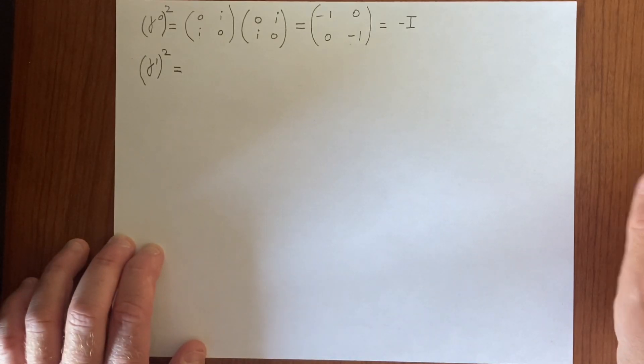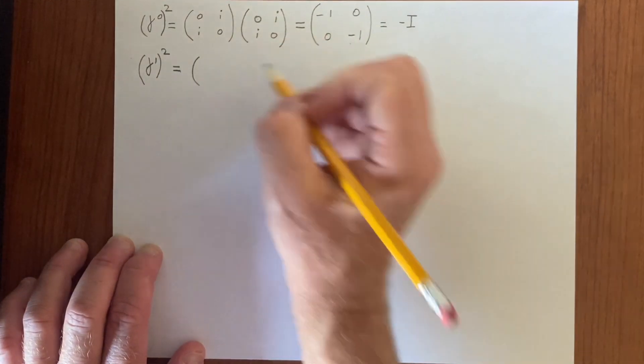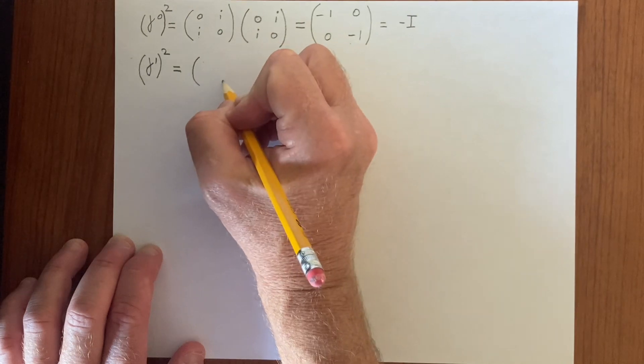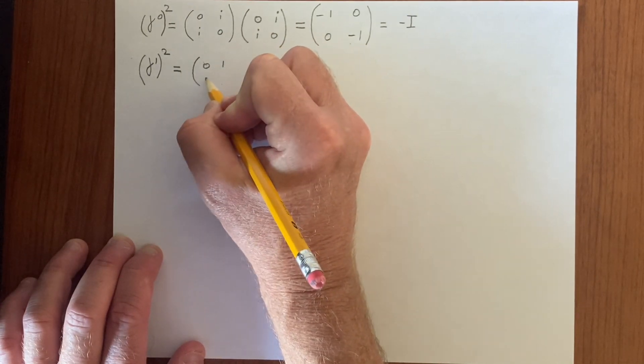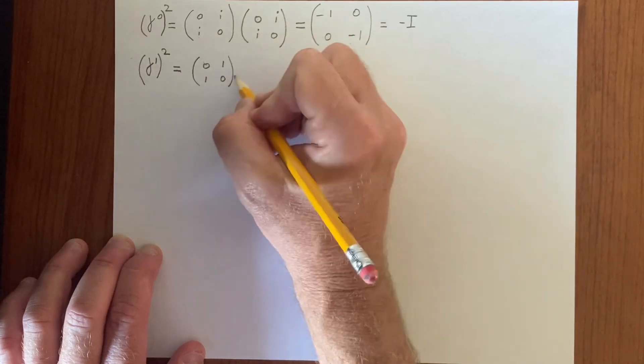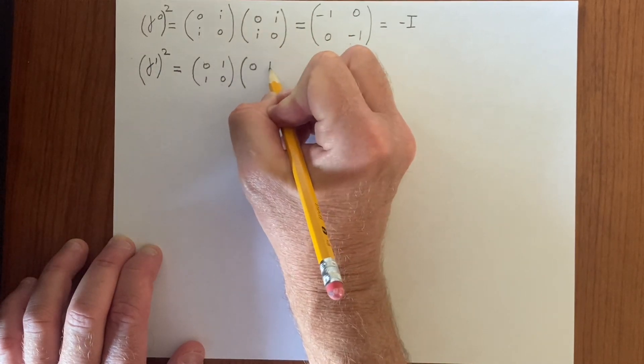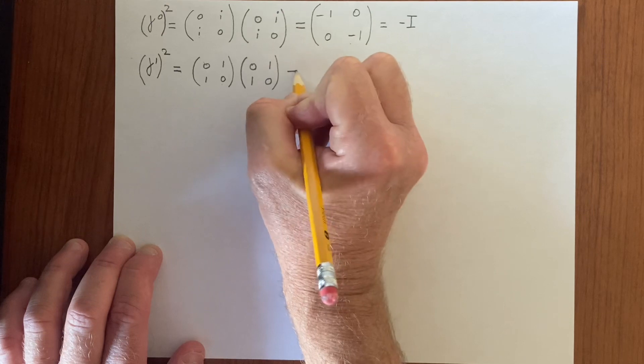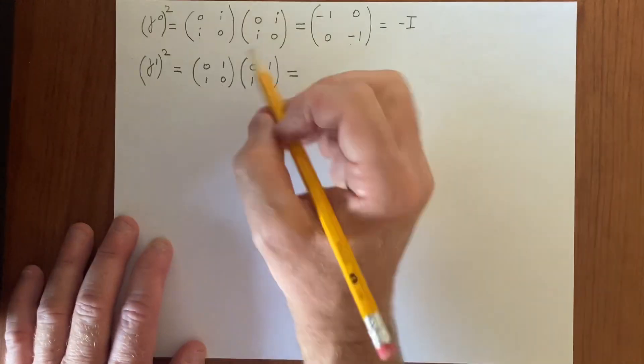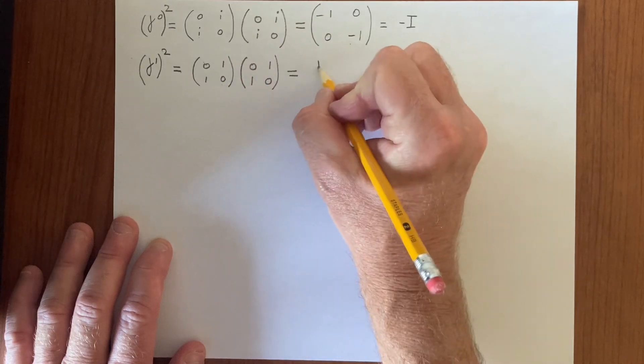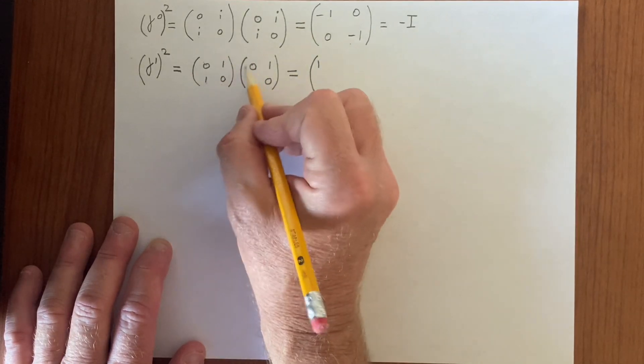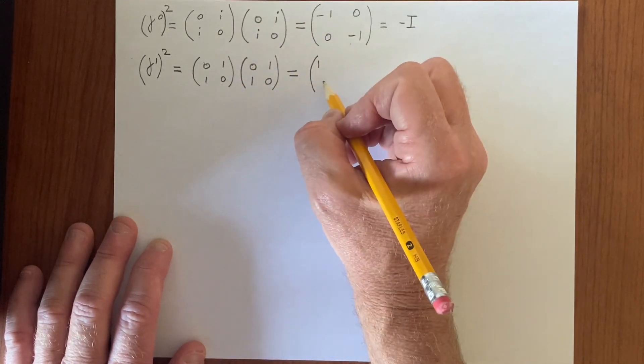So let's say we're doing gamma 1 squared, and now we'll do the same thing for gamma 1. We get 0 times 0, 1 times 1, so we have 1 here, 1 times 0 plus 0 times 1, 0.